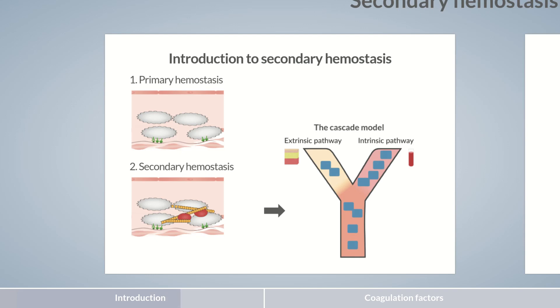The cascade model is comprised of two arms that converge to form the final common pathway. This structure has proven especially useful in understanding coagulation tests. However, for explaining the coagulation process in the body, the cascade model is less suitable.